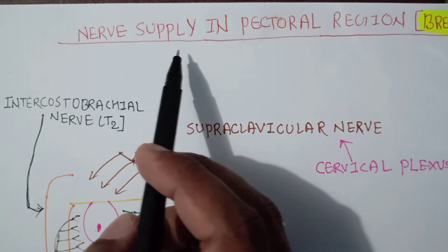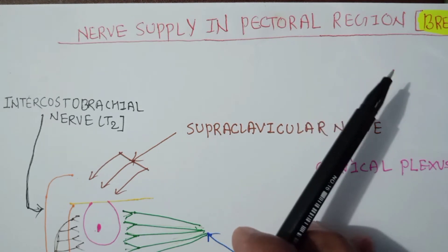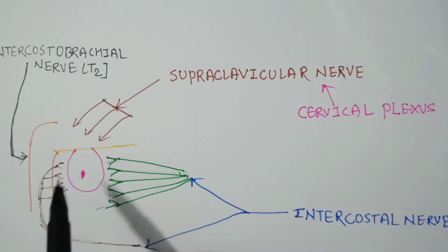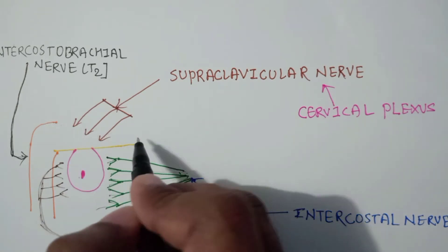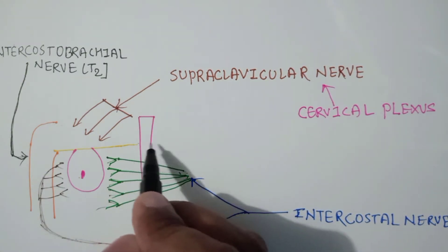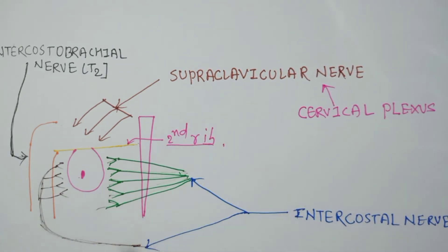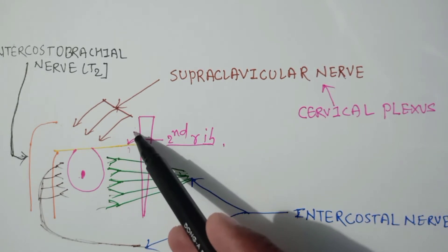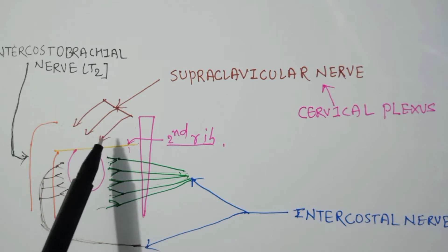In this video I am going to explain the nerve supply in the pectoral region, mainly focusing on the breast region. First, I am going to separate the upper and the lower pectoralis. Suppose this is the sternum and this is the second rib — below the second rib there is the lower pectoralis region, and above it is the upper pectoralis region.